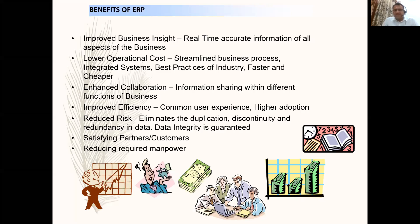Enhanced collaboration through information sharing within different business functions. Improved efficiency — a common user experience and higher adoption because it is a single interface, a single software. Everybody in the whole company, every department, sees the exact same type of interface. So in terms of training and user adoption, it is very easy. Reduced risk eliminates duplication, discontinuity, and redundancy in data — data integrity is guaranteed, and transactional consistency means if you post something in inventory, sales and finance both see the exact same information.